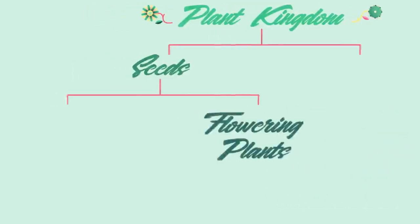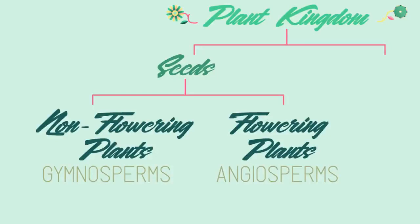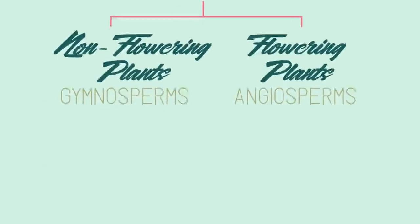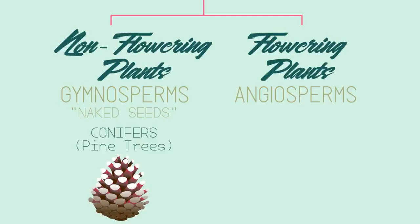Seed plants can be split into flowering plants and non-flowering plants, with scientific names of gymnosperms and angiosperms. Non-flowering plants do not produce flowers and are reproduced by means of exposed seed or ovule. Gymnosperm means naked seed — like with conifers, the cone on a pine tree is a naked seed and they do not produce flowers.